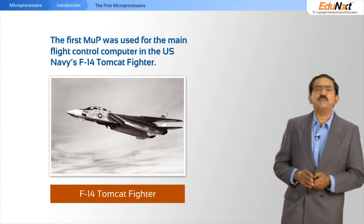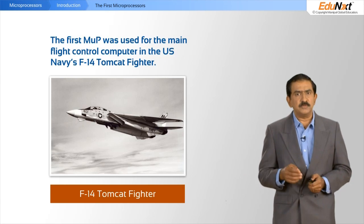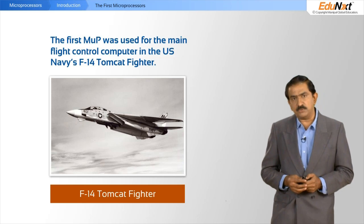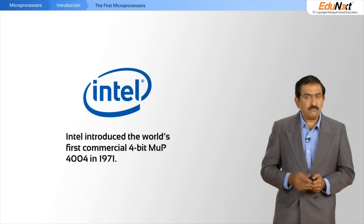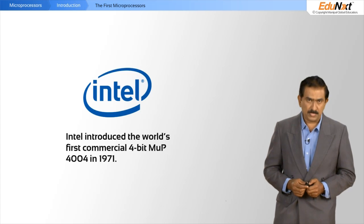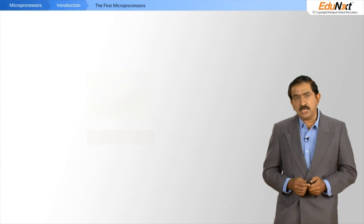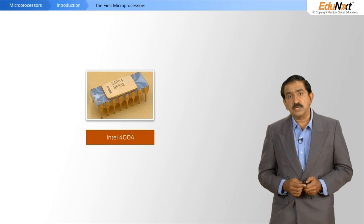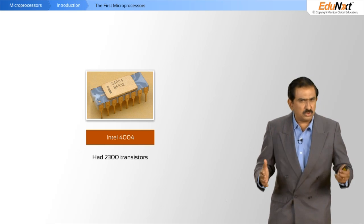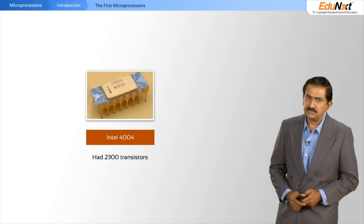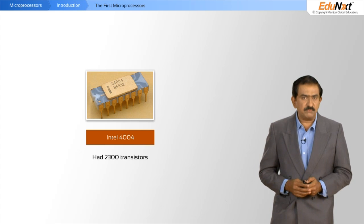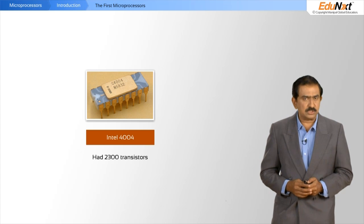Let us look at the history of microprocessors. The first microprocessor was really called the Tomcat and was made for the Department of Defense USA. But the first world's commercially available microprocessor was the 4004, which came from Intel. It was a 4-bit processor and contained 2300 transistors. This was state of the art at that time — I am talking about November 15th, 1971, when it was first launched.